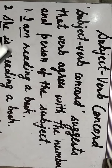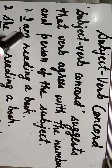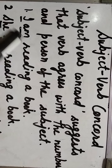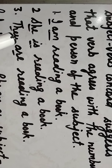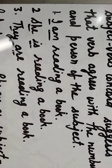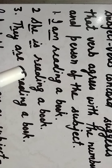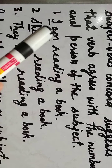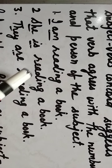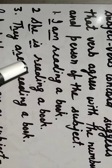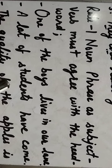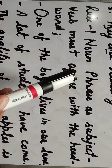'She is reading a book.' She is singular, so we use the singular word 'is.' 'They are reading a book' — 'they' is the plural subject, so we use the plural verb 'are.' So I, she, they — these illustrate subject-verb agreement.